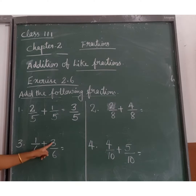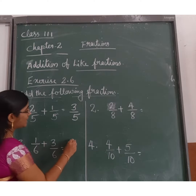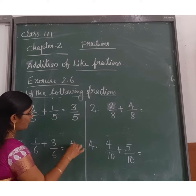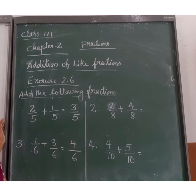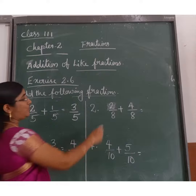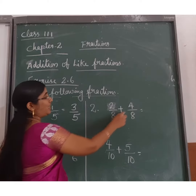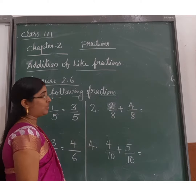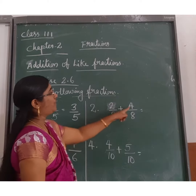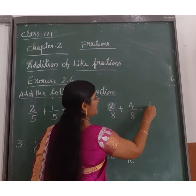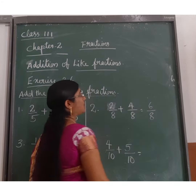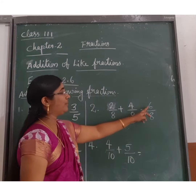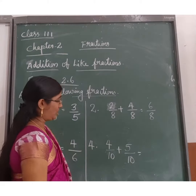1 by 6 plus 3 by 6: 1 plus 3 is 4, and the same denominator, so that is 4 by 6. Next, 2 by 8 plus 4 by 8: 2 plus 4 is 6, and the same denominator, so the answer is 6 by 8.